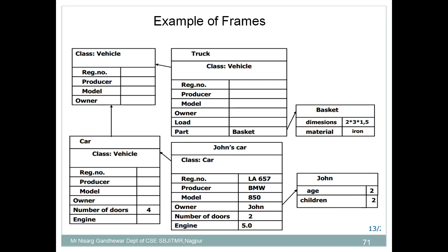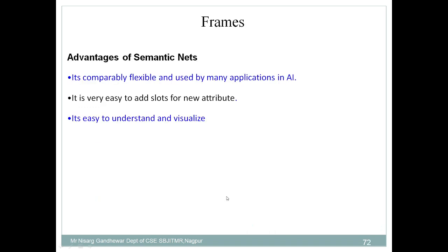Frame always tries to represent knowledge in terms of objects — just like objects and classes — and it possesses attributes where we can specify the name of each attribute along with its values.